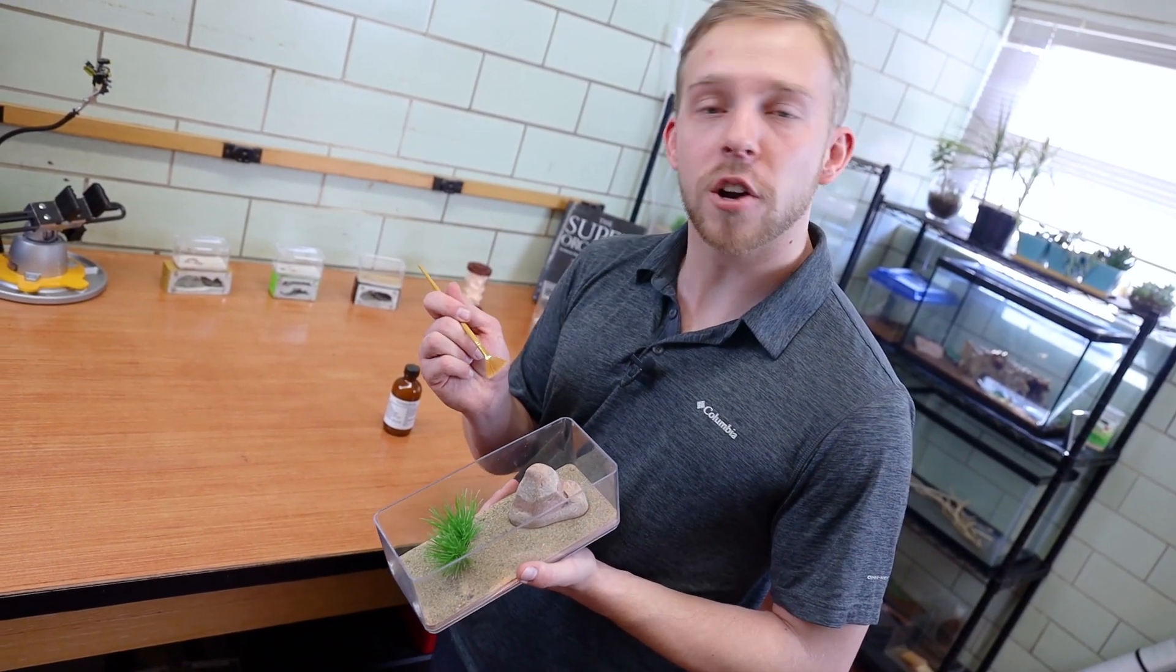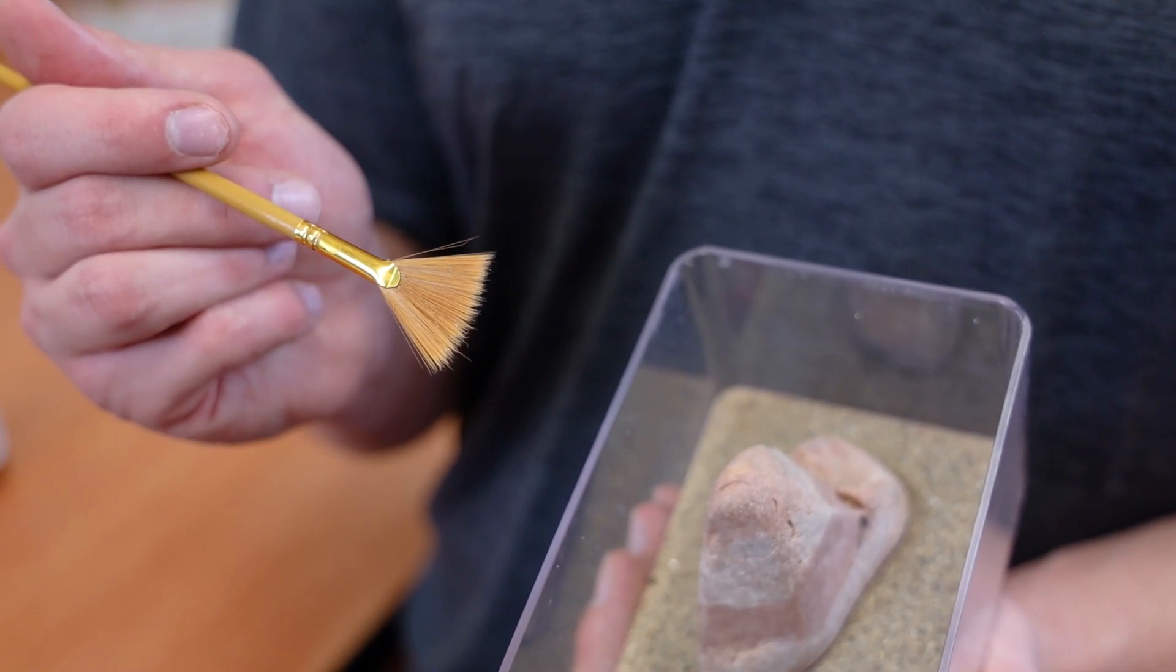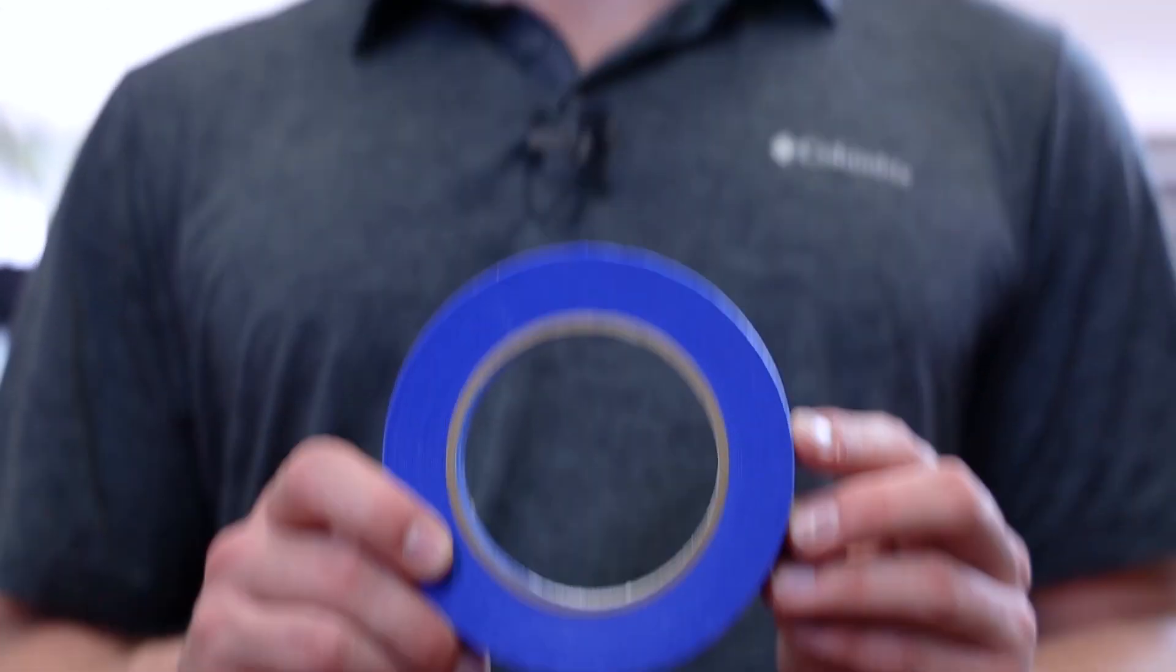When applying Fluon, I use a fan brush or a cotton swab, depending on the size of the outworld. In this case, we're going to use the fan brush. To get nice even lines, I apply painter's tape along the plastic.